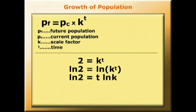And we need to rearrange that expression so that we can discover t, the unknown. We want t on the left-hand side of the equation. So rearranging, we have t equals log of 2 over log k.